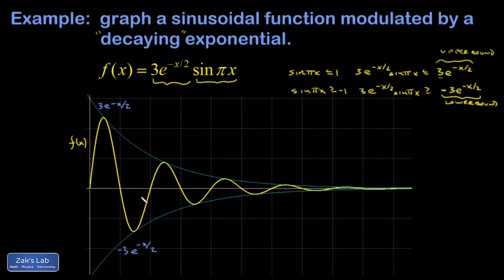So this upper and lower bound together are sometimes referred to as an envelope. So I could say that I have a sinusoidal function being modulated by an exponential envelope.